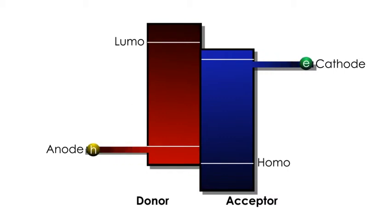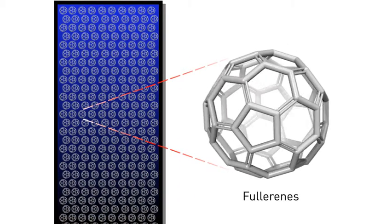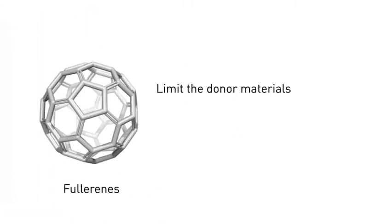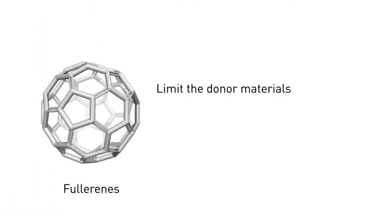A key challenge limiting the development of OPV devices is the availability of suitable electron acceptor materials. Fullerenes are by far the most common but have disadvantages. They limit the number of donor materials that can be used to only those that are energetically well matched to fullerenes.